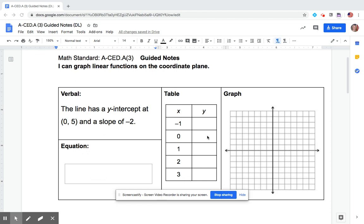So we are given the verbal description and we have to figure out the equation, the table, and the graph. We'll start with the description - the line has a y-intercept at (0, 5) and a slope of -2. So if you were given information about this line, what would you do first? Go right to the equation, go to the table, or the graph? I think I'm going to use this ordered pair and I'm going to put a 5 right here.